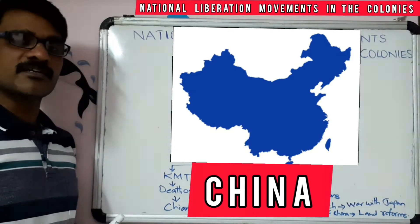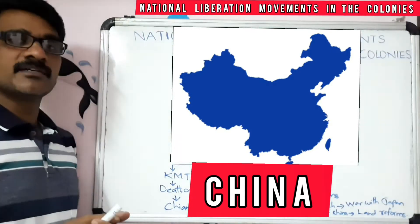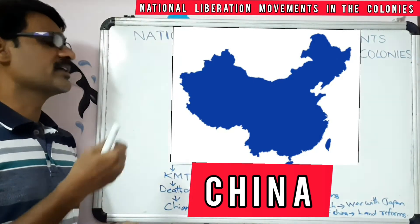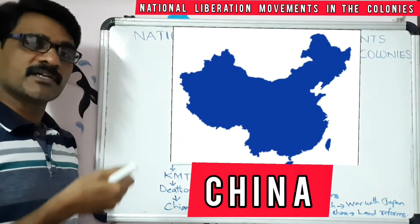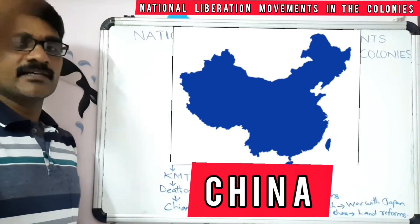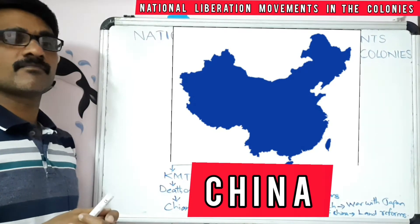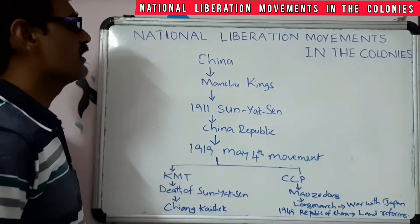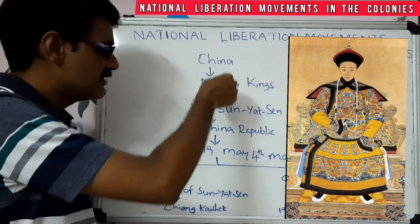Today we learn about China — how they experienced the imperial countries and how they finally got independent from the old emperors or kings and how they sent the outsiders away. In this lesson we are going to discuss about China and some of the major incidents.